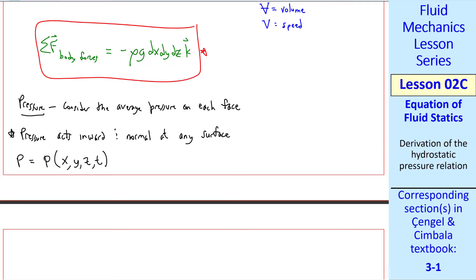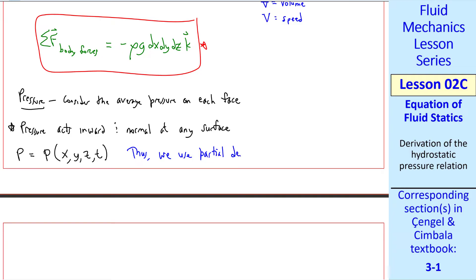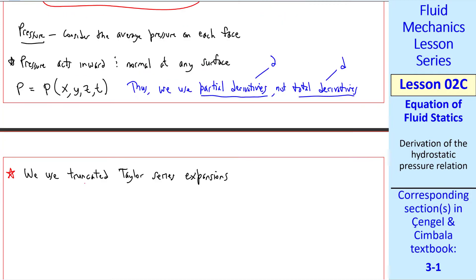Thus, we have to use partial derivatives, the Greek symbol del, not total derivatives, the more common d. In many places in this lecture, we're going to use truncated Taylor series expansions.